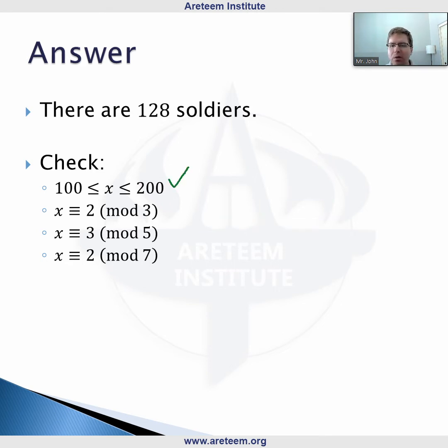Let's prove our answer is correct. Is x between 100 and 200? Sure. Check: 128 = 126 + 2 = 42 × 3 + 2, so x ≡ 2 (mod 3). Also, 128 = 125 + 3 = 25 × 5 + 3, so x ≡ 3 (mod 5).